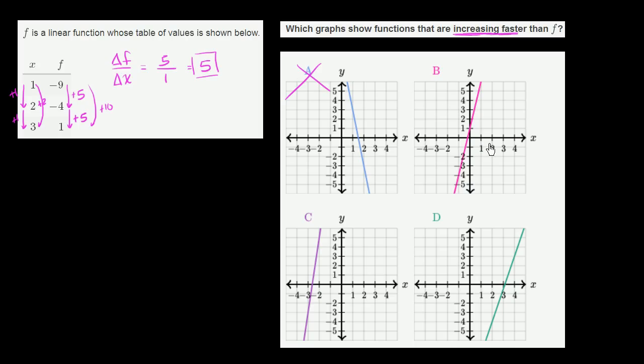If we look at this one right over here, if we start over here and increase 1 in the x direction, if our change in x is 1, it looks like our change in y is exactly 5. So it looks like for choice B, our slope is exactly 5, or change in y over change in x is exactly 5. So it's not increasing faster than f, it's increasing the same as f.